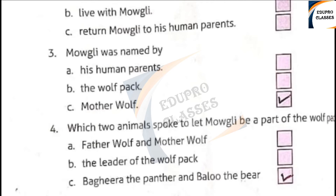Question 4: Which two animals spoke to let Mowgli be a part of the wolf pack? A: father wolf and mother wolf, B: the leader of the wolf pack, C: Bagheera the panther and Baloo the bear. C is the right answer.